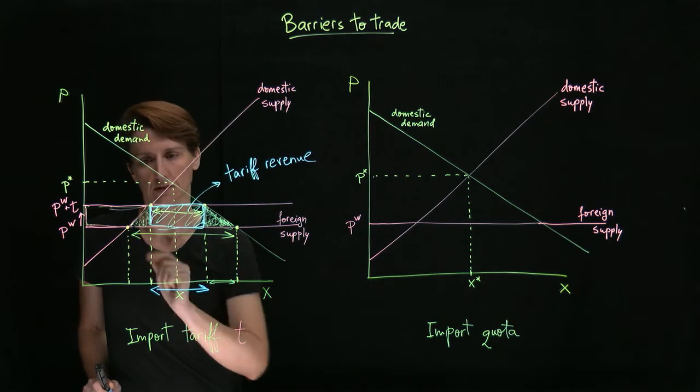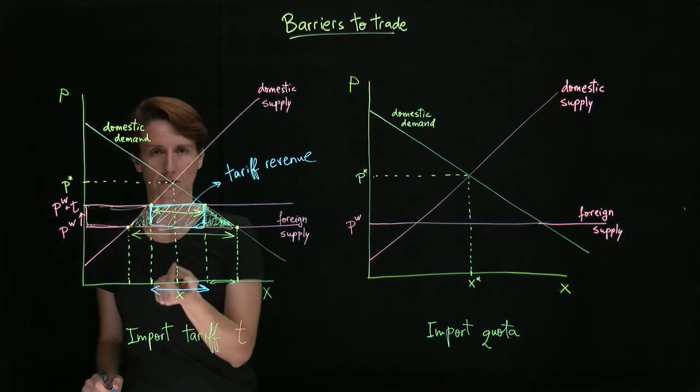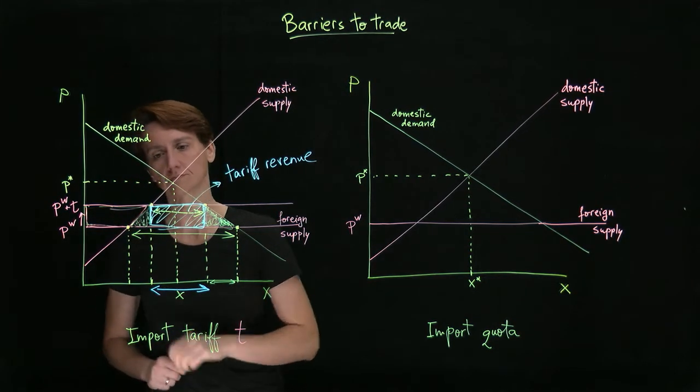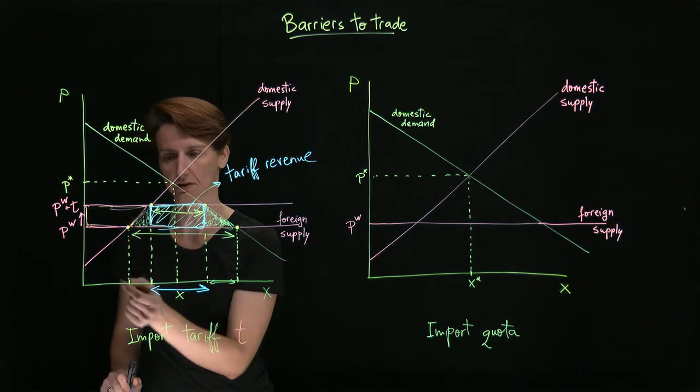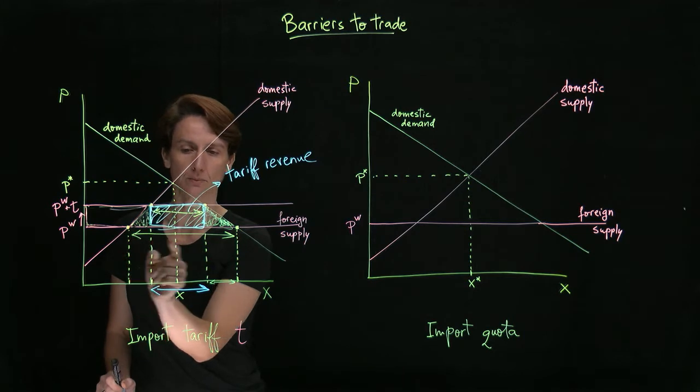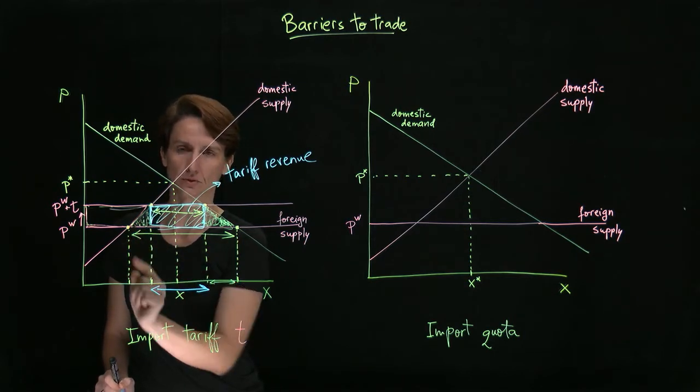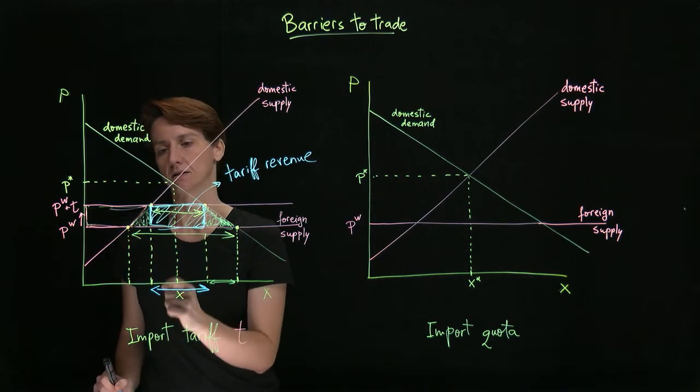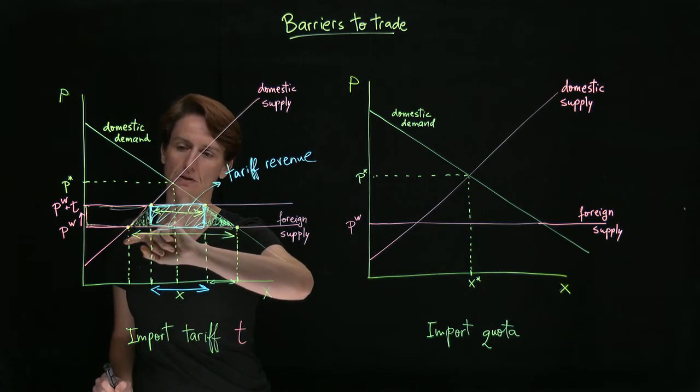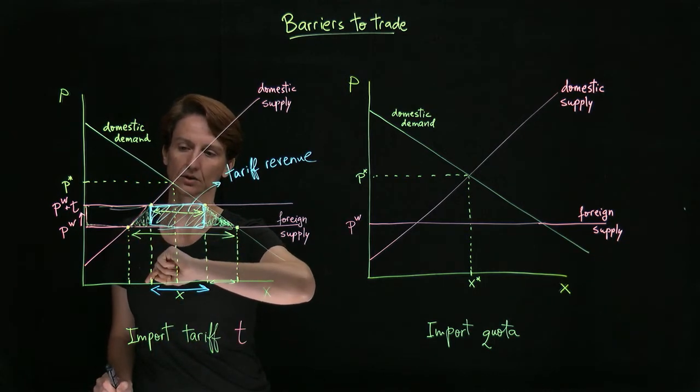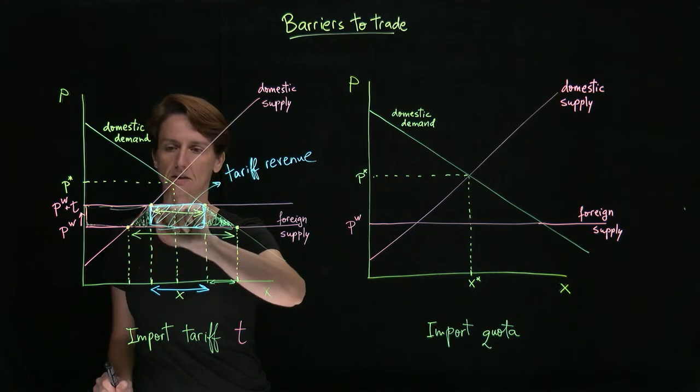There's another segment here, another area that denotes economic loss. And this is proportional to the number of units that used to be imported but is now produced domestically.